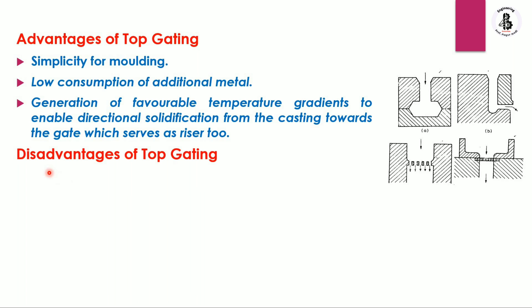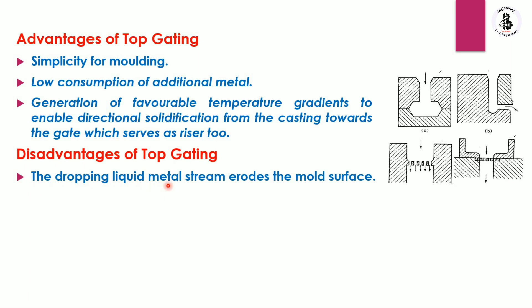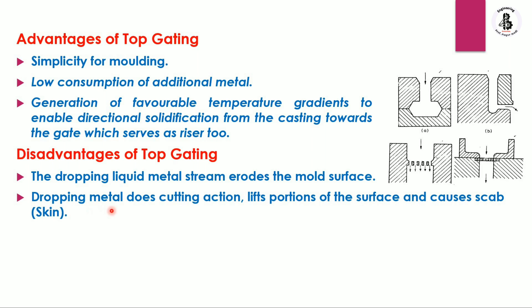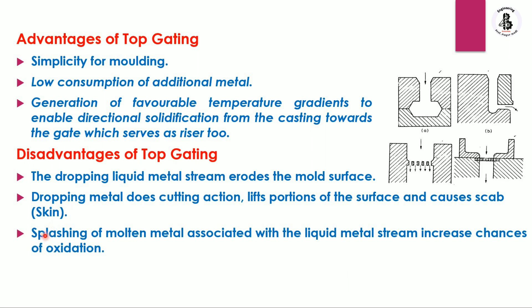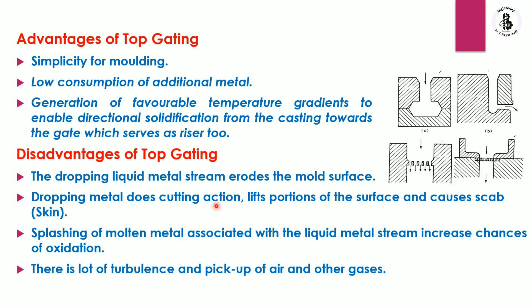The disadvantages of the top gate system are: first, the dropping liquid metal stream erodes the mold surface, enlarging the mold cavity and damaging its internal surface. Second, the dropping metal causes cutting action, lifts portions of the surface, and causes scrap. Third, splashing of metal increases the chances of oxidation. Fourth, there is a lot of turbulence and pickup of air and other gases.